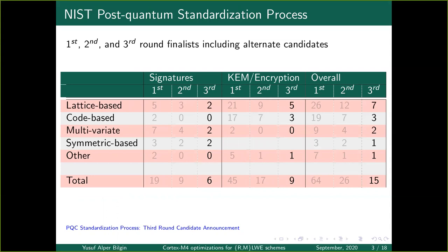NIST has initiated a standardization project for post-quantum algorithms, which include both key encapsulation mechanisms and digital signatures. The standardization project was started in 2016. The first round took place during 2018 and assessed different possible quantum-safe algorithms across five main categories: lattice-based, code-based, multivariate, symmetric-based, and others such as supersingular elliptic curve isogenies or zero-knowledge proofs. In the first round, performance was not the main consideration; instead, NIST considered security and cost methods as primary factors.